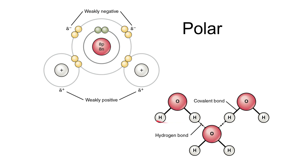So you can see here a partially positive hydrogen part of this water molecule forms a hydrogen bond with a partially negative portion of this water molecule. Now these hydrogen bonds themselves are very, very weak, but since we have hundreds and hundreds of trillions of water molecules in even the smallest bead of water, we have many, many hydrogen bonds.